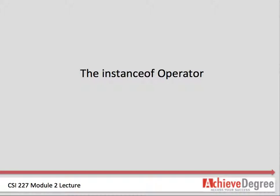This operator tests whether a given object is, directly or indirectly, an instance of a given class. The left operand is always an object reference. The right operand is always the name of a class. For example, this will return true if v1 is of type car and not bicycle. Once you know if your object is an instance of the type you tested, you can cast the object so that it will be accepted in other methods.